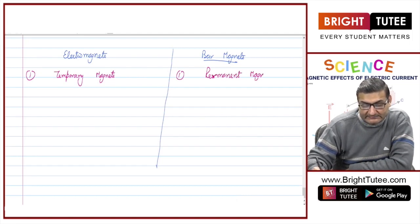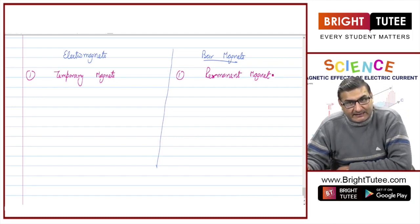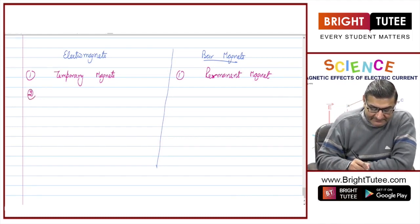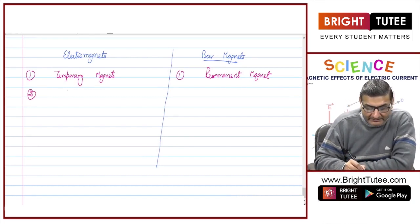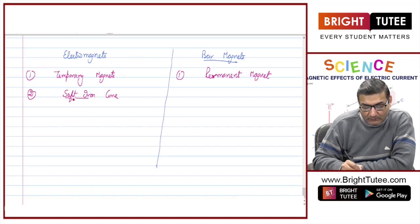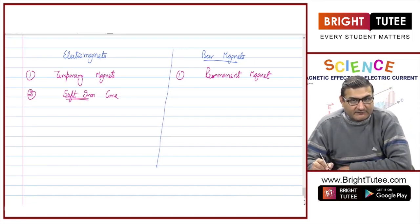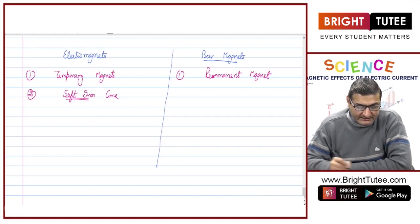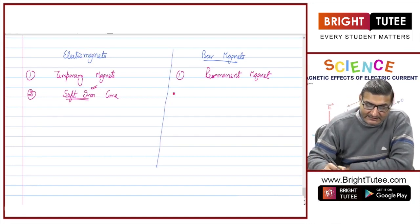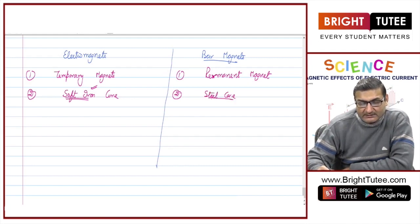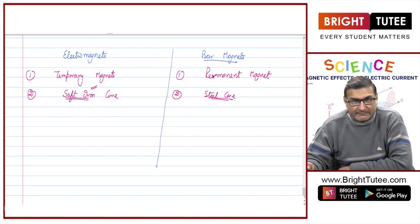Even after electricity is switched off, the magnetism in a bar magnet still remains. The second difference is because of the core material. In electromagnets, we use a soft iron core — soft iron has the best ability to produce a stronger magnetic field. Whereas in bar magnets or permanent magnets, a steel core or certain alloys are taken.